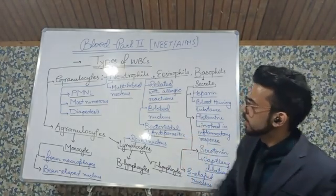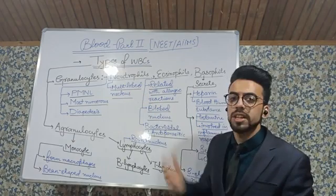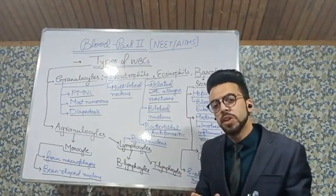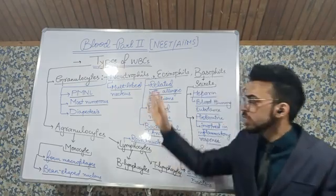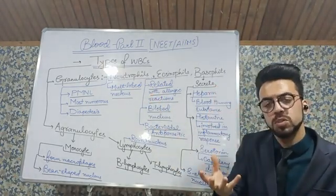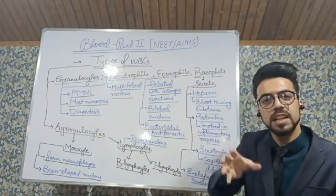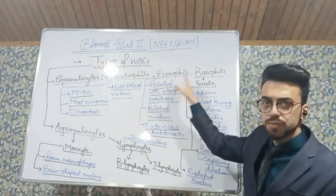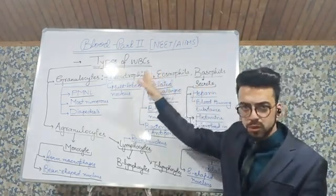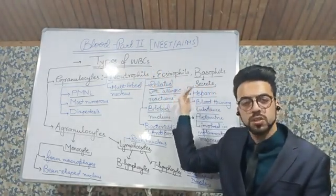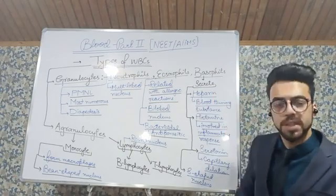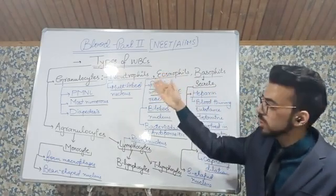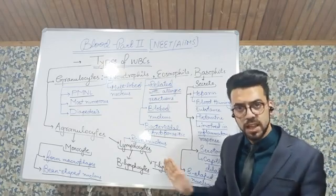The first type of WBC is granulocytes. Granulocytes are basically cells whose cytoplasm is filled with grain-like deposition. Within granulocytes, there are three further subtypes: the first one is neutrophil, another one is eosinophil, and the third one is basophil.